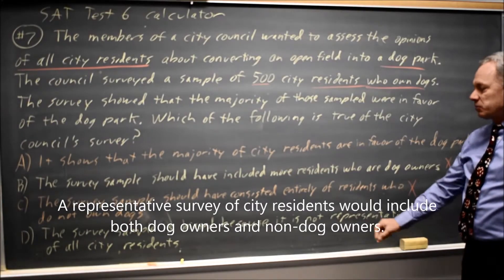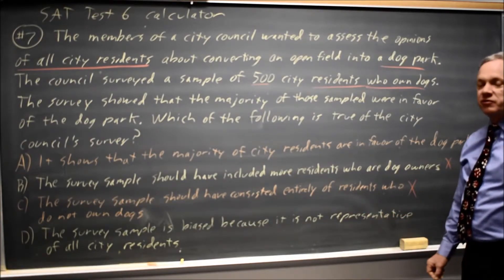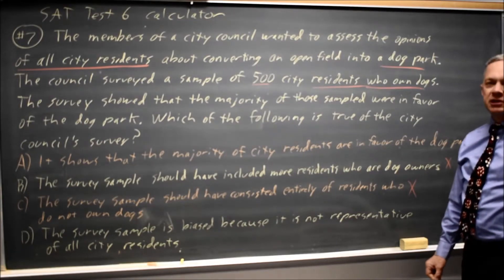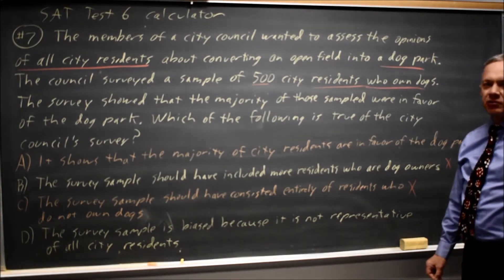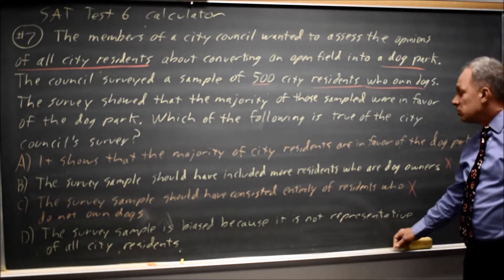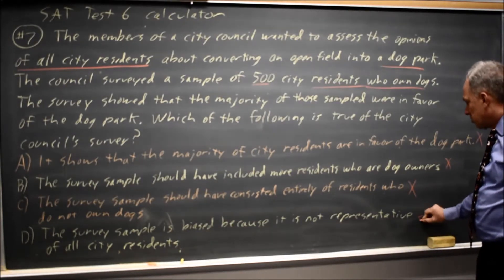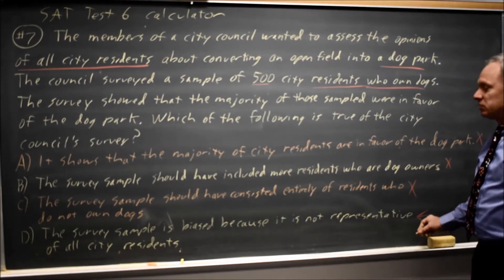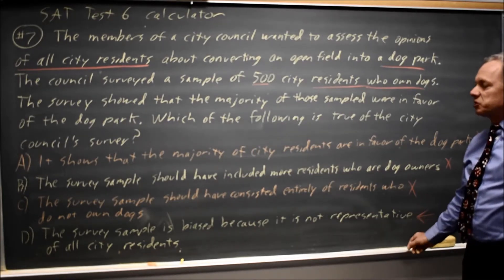Finally, the survey sample is biased because it is not representative of all city residents. If you're trying to represent all city residents, you should take a random sample of all residents rather than a sample who are likely to be on one side or the other of the issue. So the correct answer here would be choice D.